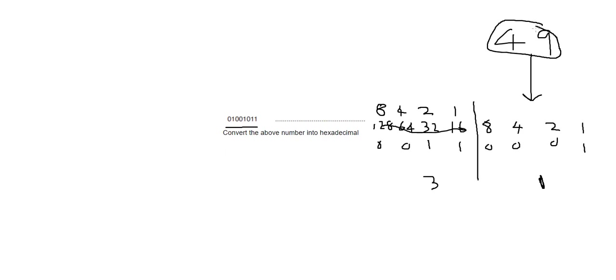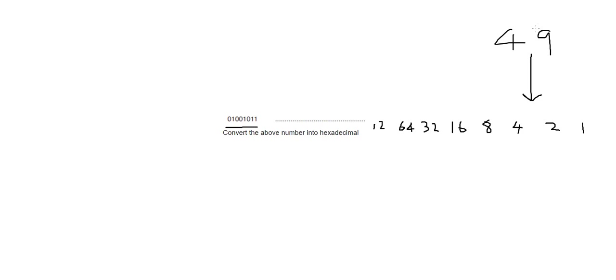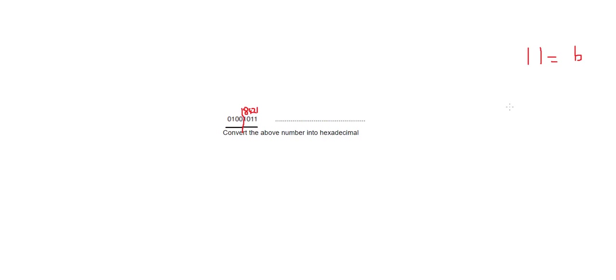This question is different because it already gives us a binary number — we don't need to convert from denary first. Split the binary number down the middle. For the left group, place values 1, 2, 4, 8: 8 plus 2 is 10, plus 1 is 11 — eleven in hexadecimal is B. For the right group we get 4. So the hexadecimal answer is B4.